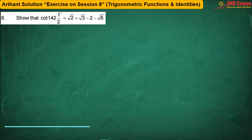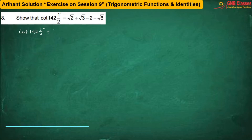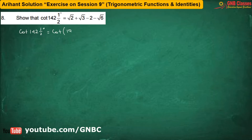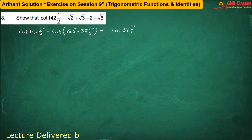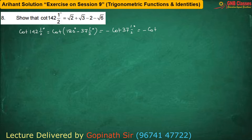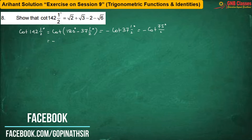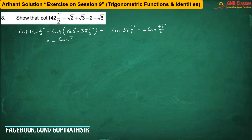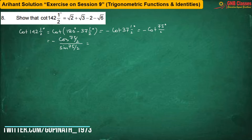Here we have to find out the value of cot(142.5°), which equals cot(−cot37.5°), which equals −cot(75/2)°. Now cot θ can be written as (1 + cos2θ)/(sin2θ). Multiplying numerator and denominator by 2cos(75/2)°.